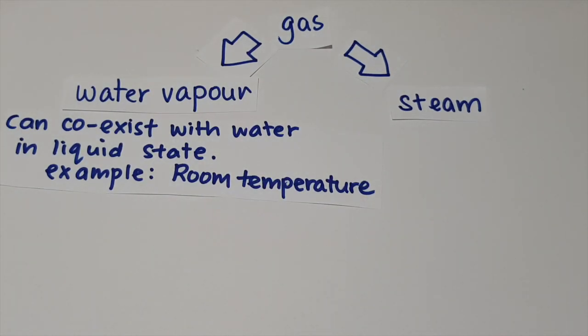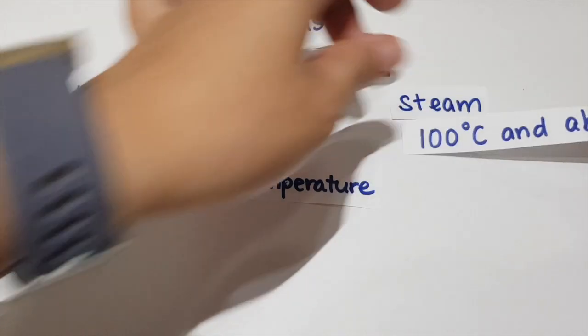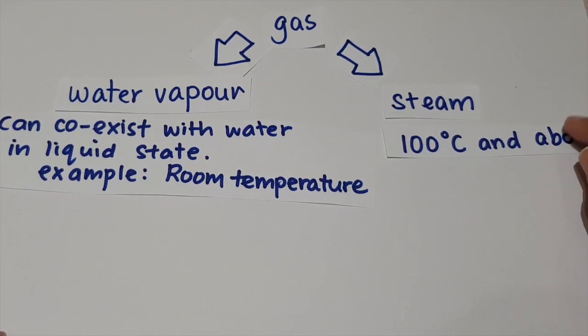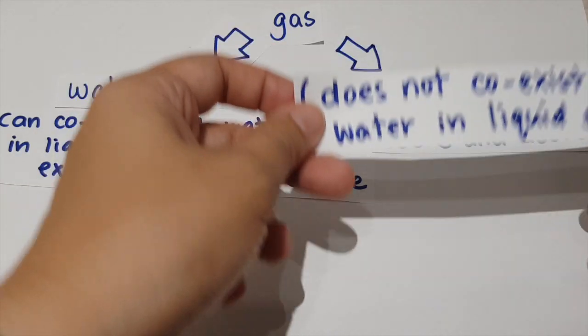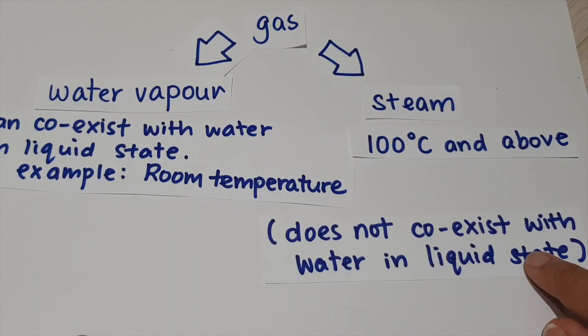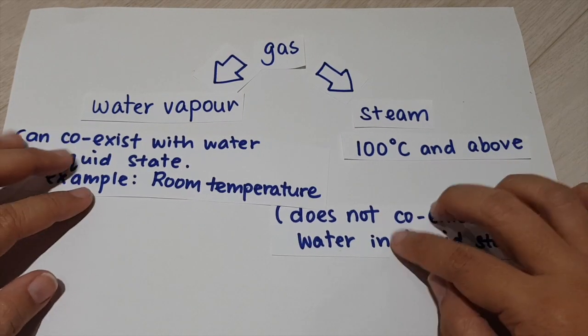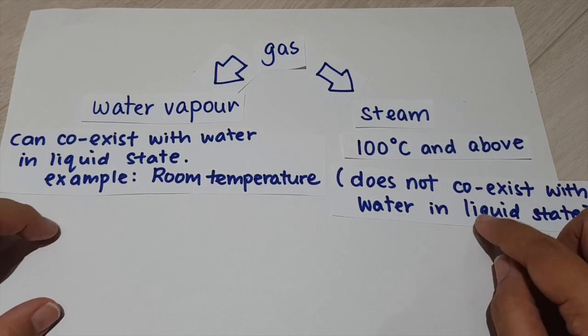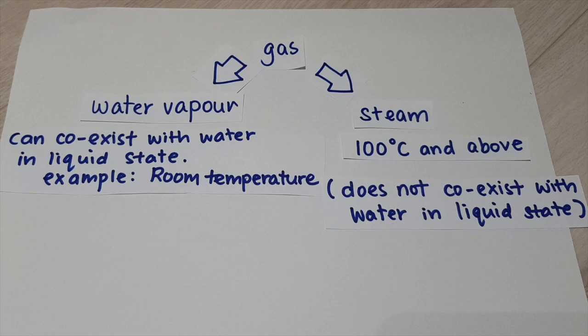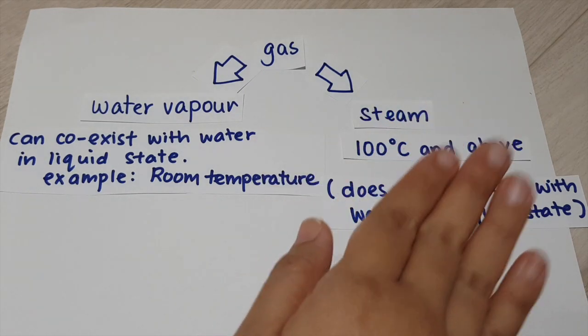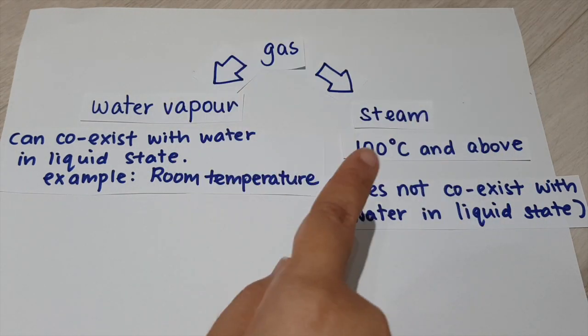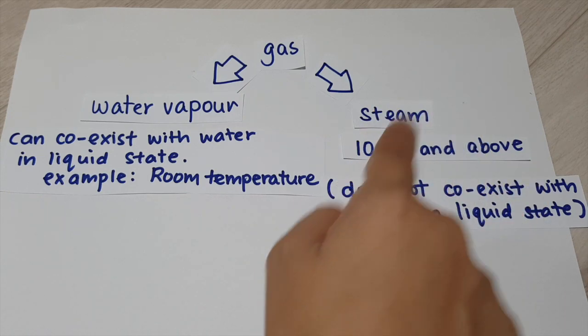However, for steam, it is something that we define as the gas that water turns into when water boils. So water boils at 100 degrees Celsius. Steam must be at 100 degrees Celsius and above. Also, steam does not co-exist with water in liquid state, because it is only existing after all the water have boiled at 100 degrees Celsius to turn into gas.